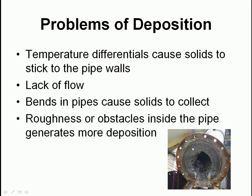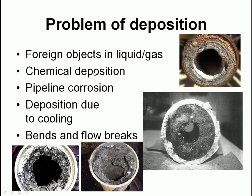You can see a pipe here where depositions have happened - that is the rim of the pipe with more and more deposits going through. A common problem in domestic water pipes is limescale building up on the inside. In the past with lead pipes, it was actually a desired effect - limescale would cover the lead walls quickly, and once covered there's very little lead coming through and not much of a health issue. Other problems of deposition include foreign objects, chemical deposition, and pipeline corrosion. There's also deposition due to cooling and bends.